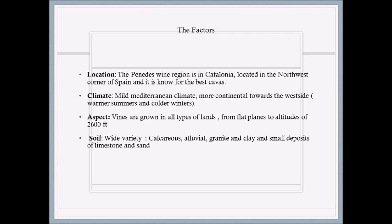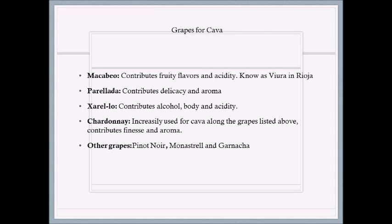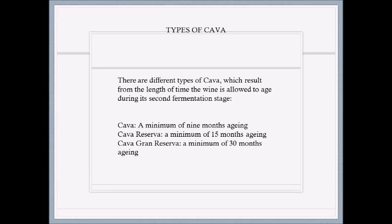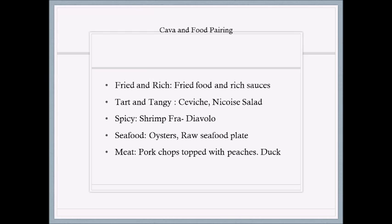Congratulations — you have just listened to the seven factors contrasting and comparing Rioja, Ribera del Duero, and Priorat. Now moving into the seven factors comparing and contrasting Bordeaux and Burgundy. Bordeaux is located in southwestern France on the Atlantic Ocean, along the Gironde, Dordogne, and Garonne Rivers.